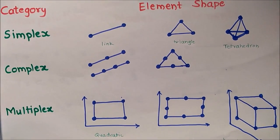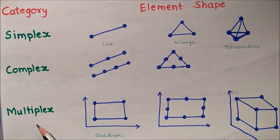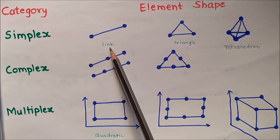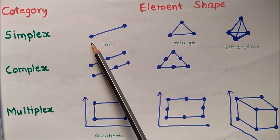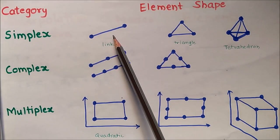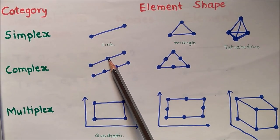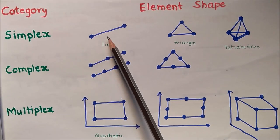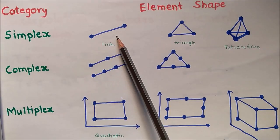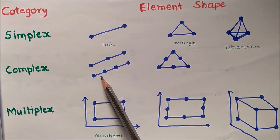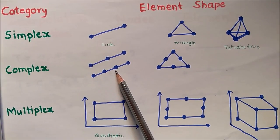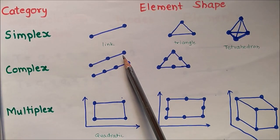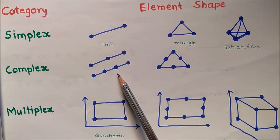These three categories are simplex, complex, and multiplex, defined by element shape and nodes. For 1D elements, we use link elements. Simple link elements have only corner nodes and are called simplex elements. When intermediate nodes are added to the link element, we get complex elements, which use higher-order interpolation functions beyond linear.